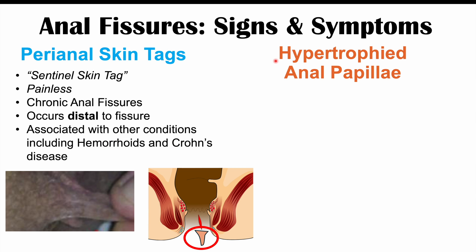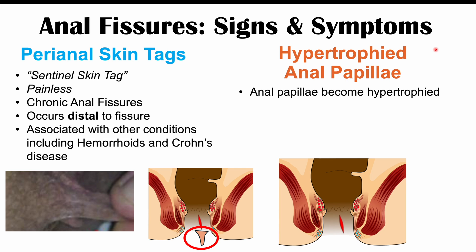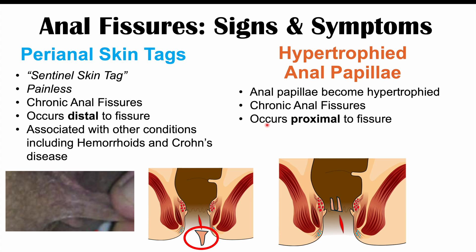We can also see hypertrophied anal papillae in chronic anal fissures. The anal papillae are located at the dentate line and become hypertrophied — enlarged in size. This occurs proximal to the fissure, meaning above the anal fissure, closer to the core of the body. This finding can only be observed with a clinical examination but is another characteristic finding of chronic anal fissures.